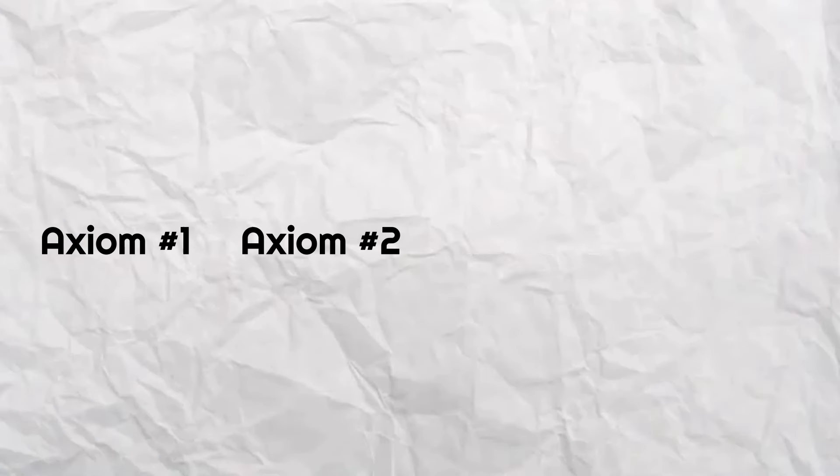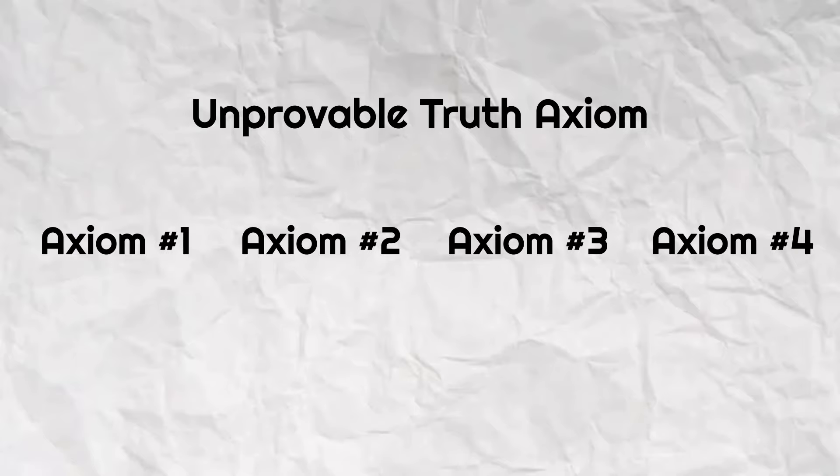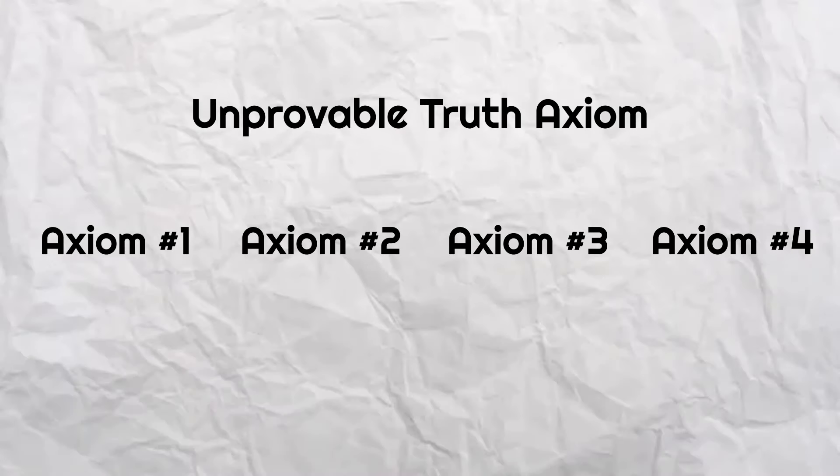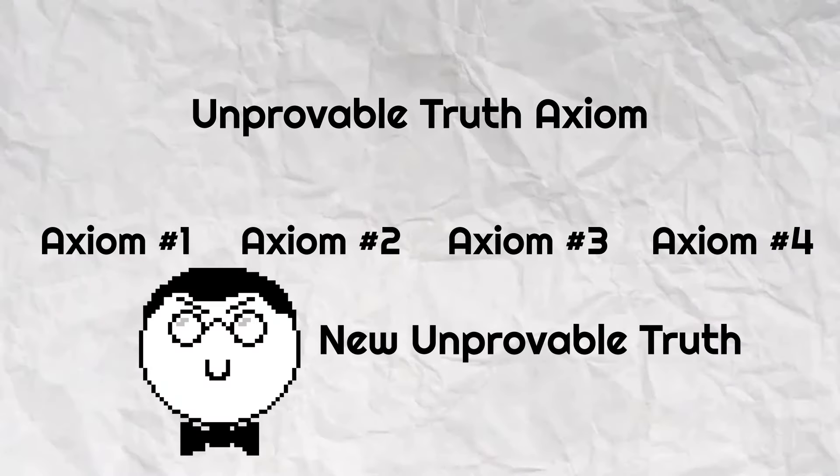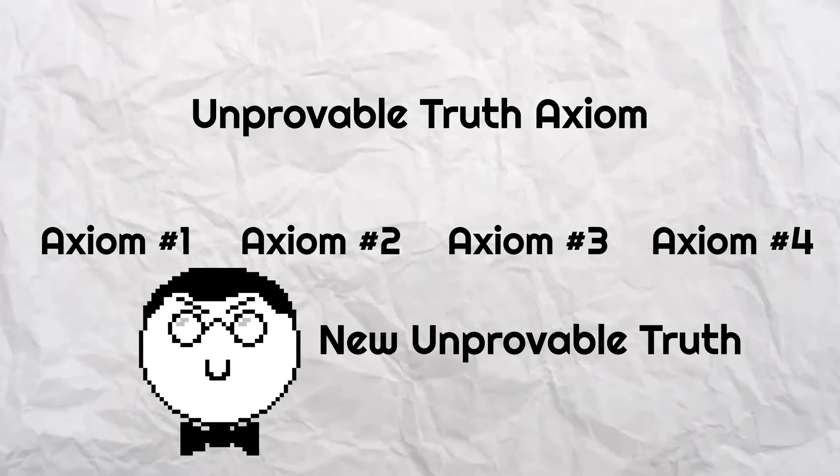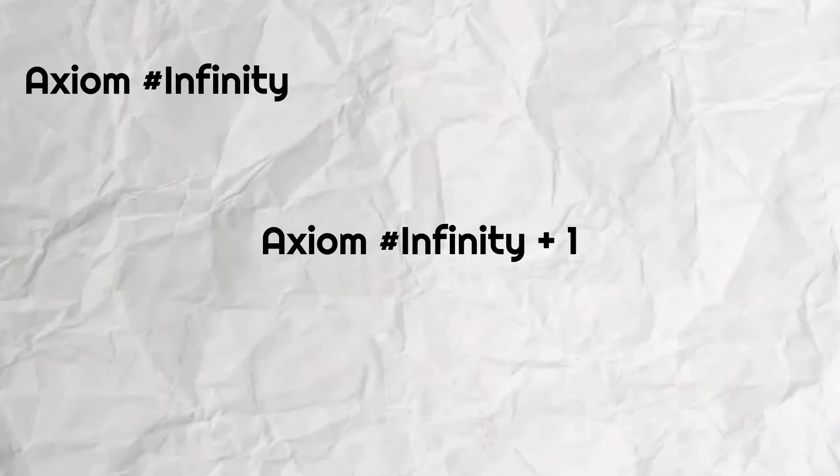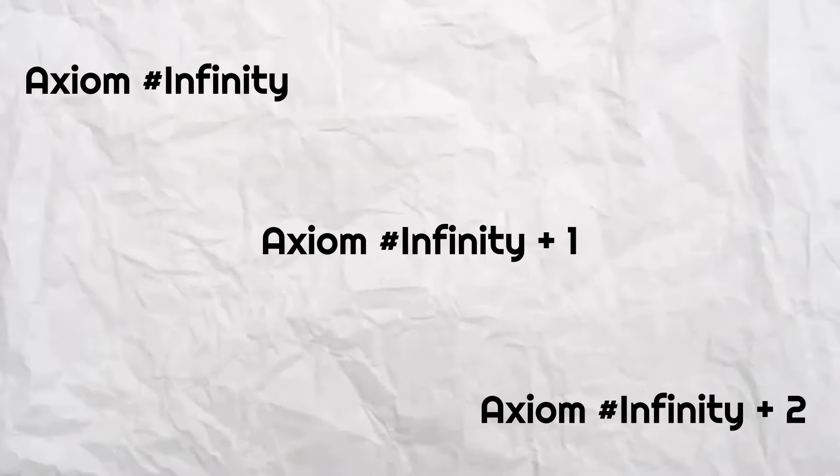Another important part of this theorem is that even if you add the unprovable truths as axioms to the systems they are part of, there will always be more unprovable truths that come from the system. It is impossible to escape this incompleteness unless the axioms are infinite in number, but I don't see that happening anytime soon.